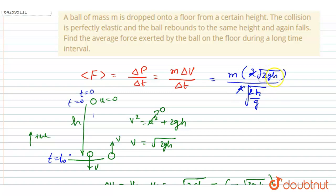2 and √2 and √h will also get cancelled and you will get mg as the average force. And this will be your answer. Thank you.